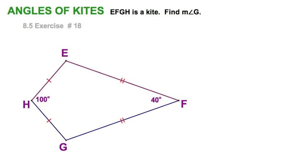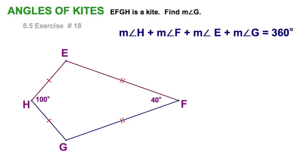This figure is a kite. We can see that we've got two pairs of adjacent congruent sides right here. And we're given two of the interior angles. We're looking for a measure of angle G. This would be straightforward. Remember, all four angles must add up to 360. After all, it is a quadrilateral.